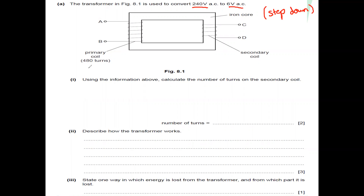The primary coil has 480 turns (NP). The input voltage of the primary is 240 volts. The output voltage — the voltage of the secondary — is equal to 6 volts. The number of turns of the secondary is unknown. The question asks us to use this information to calculate the number of turns of the secondary.